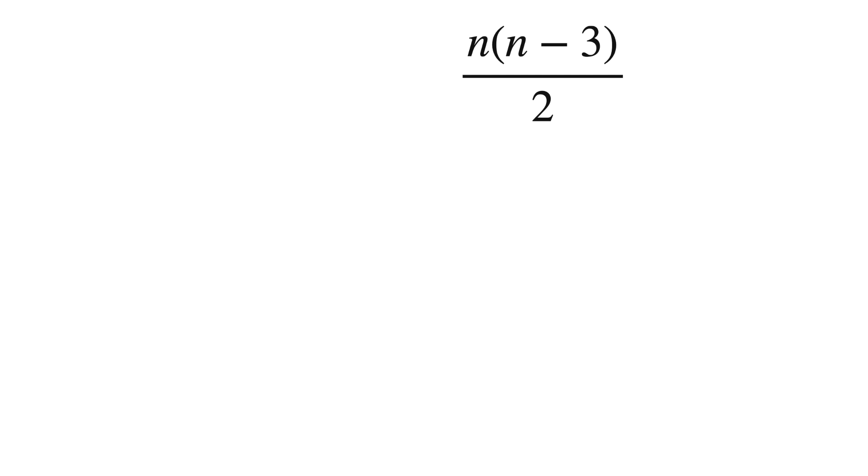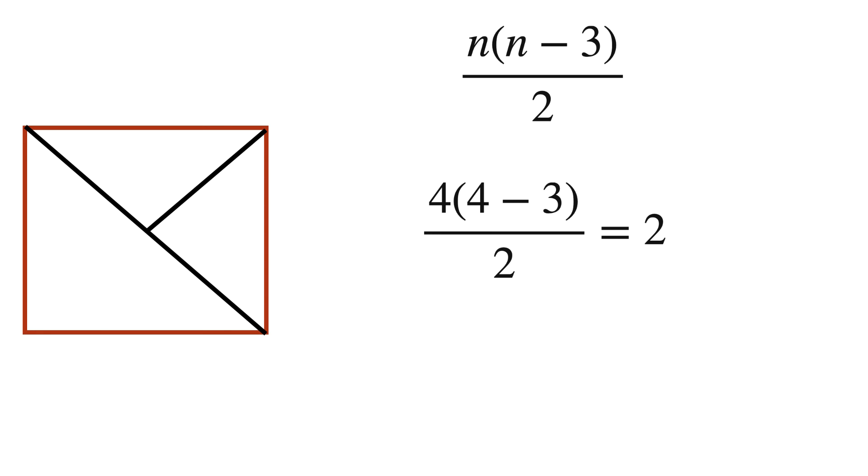For example, in a square, there are 4 vertices. In this case, n becomes 4. Hence, after substituting, number of diagonals possible in square is 4 times 4 minus 3 over 2, which is equal to 2.